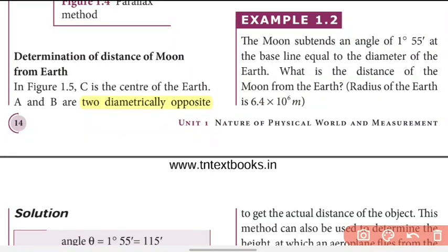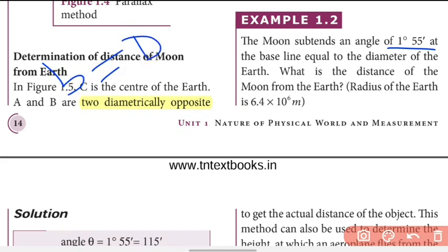Example 1.2: The Moon's parallax angle theta is 1 degree 55 minutes, and the baseline is equal to the diameter of the Earth. What is the distance of the Moon from the Earth? The parallax angle theta equals 1 degree 55 minutes, and the baseline B is equal to the diameter of the Earth.